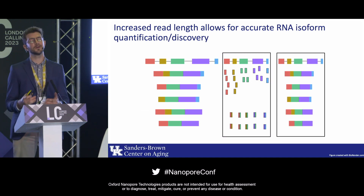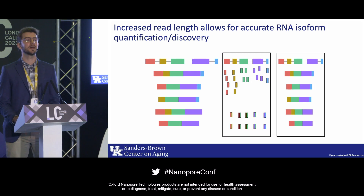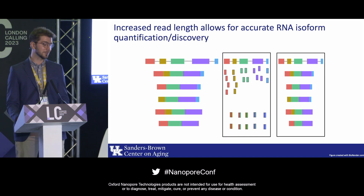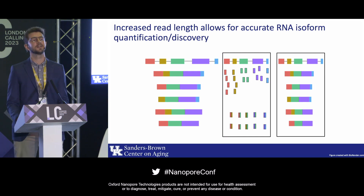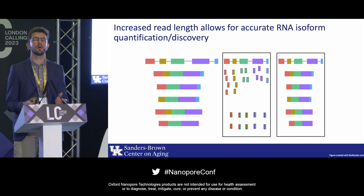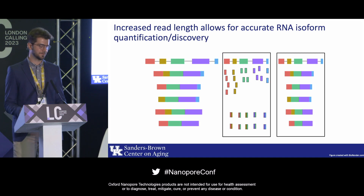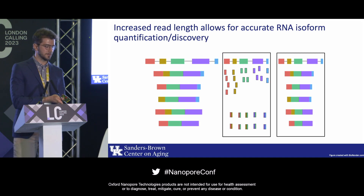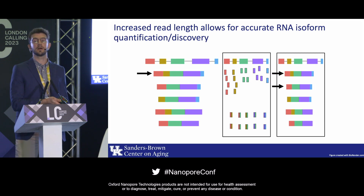With long-read sequencing, your readout should theoretically show full mRNA molecules being sequenced at every read. With this, it's easy to quantify the different isoforms — we just have to count them.